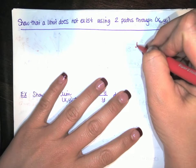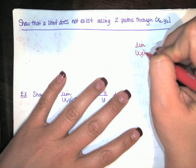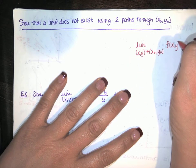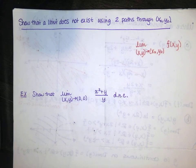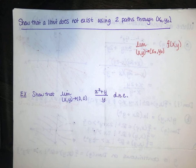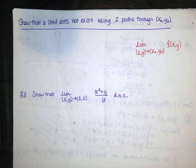If I have the limit as xy approaches x naught y naught of f of xy, and I want to show that it exists, if it's not continuous but it's 0 over 0, I might have to get clever and go back to the epsilon-delta definition to prove that limit exists. If the limit doesn't exist, I might have some problems with that too. It's difficult to prove in general that a limit of a function of two variables doesn't exist.